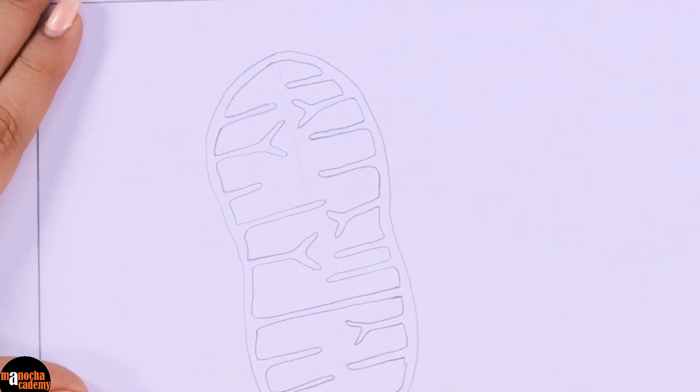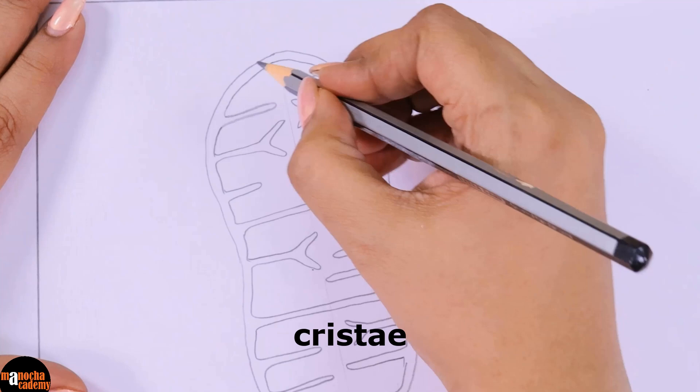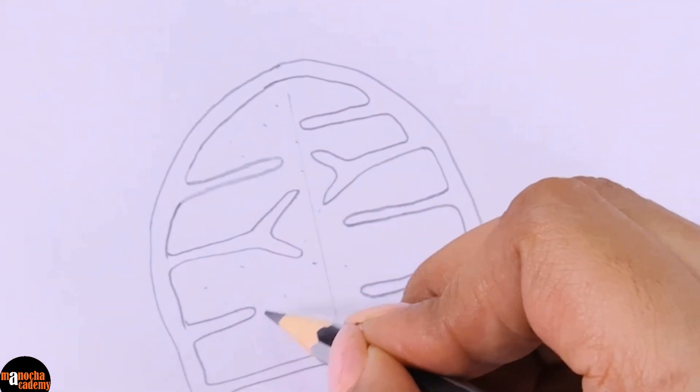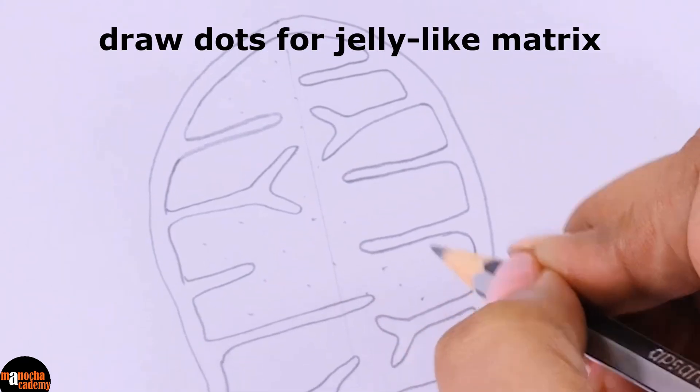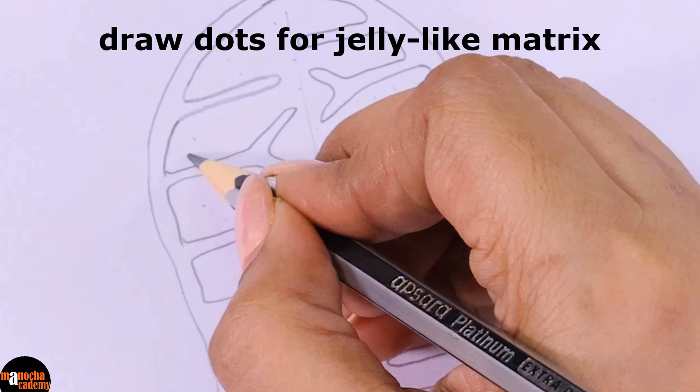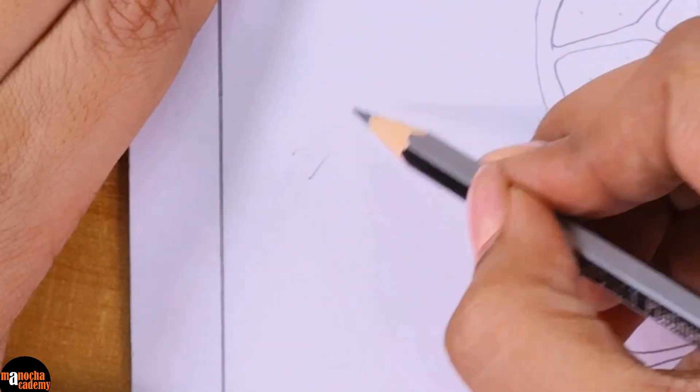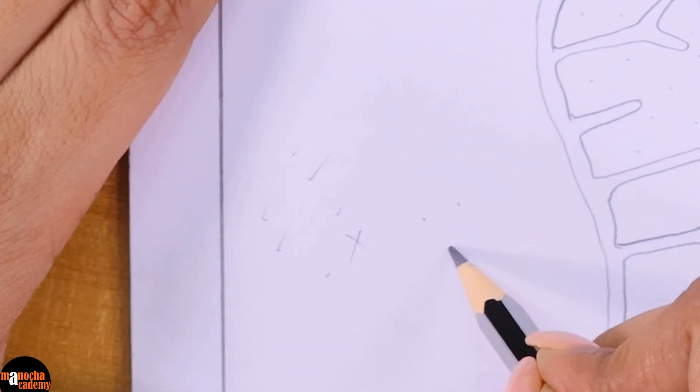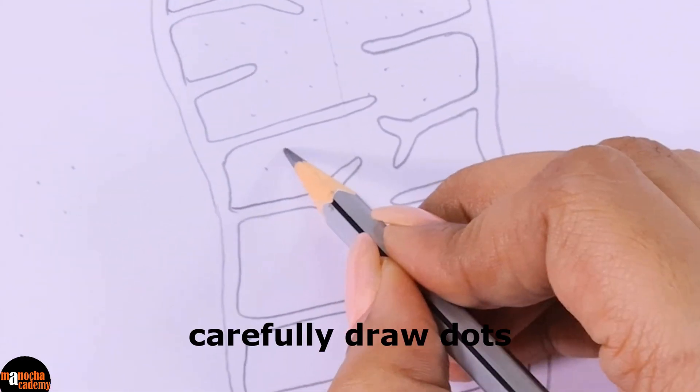That is your inner membrane which has been thrown into finger-like projections. These finger-like projections are known as cristae. Now inside the mitochondria, just like any other cell organelle, we have a jelly-like matrix. So we will put dots. When you are putting dots, make sure these dots are neat.